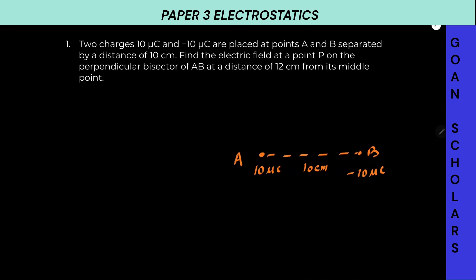Find the electric field at a point P on the perpendicular bisector of AB. Perpendicular bisector means the equatorial plane. So let's take a point P — perpendicular and bisecting means this will be 5 centimeters and this will also be 5 centimeters. And this P point is at a distance of 12 centimeters from the midpoint of AB. We have to find the electric field.